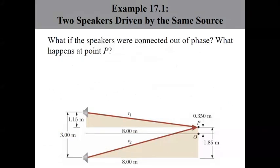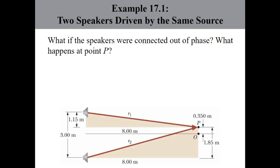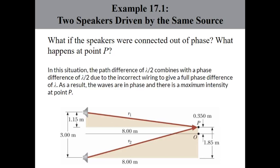What happens if the speakers are connected out of phase? If the speakers are connected out of phase, the wave from the top speaker comes out 180 degrees out of phase from the one on the bottom. However, once they reach point P, the wave taking path R2 has traveled an extra half wavelength, which actually makes them arrive in phase. That extra path is enough to put it back into alignment with the first wave. Since they're in phase, the superimposed wave is the loudest possible — they create a sound wave of maximum intensity at that point.